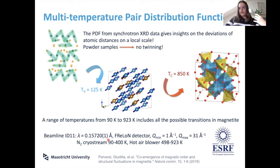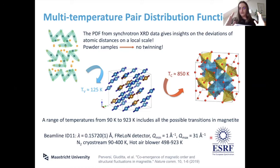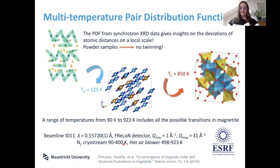To do this we went to the ESRF beamline ID11, which works with very low wavelength — necessary because we're using iron and want to stay away from the iron absorption edge to avoid resonant X-rays. We needed a very good detector camera and high Q-range collection to resolve very short distances. We changed sample environments: nitrogen cooling from 90 to 400 K, then switched to a hot air blower from almost 500 K up to very high temperature.